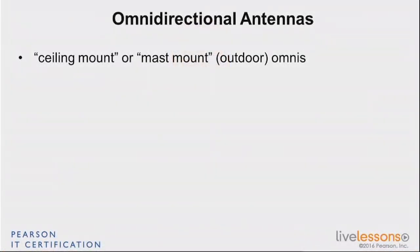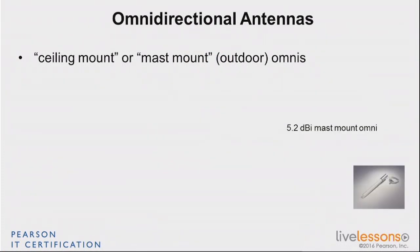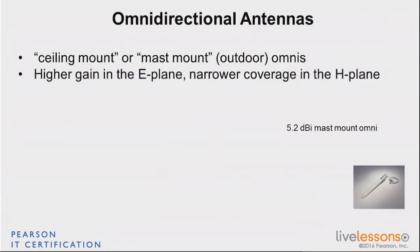There are also external antennas that you would connect to an access point — for example, the ceiling mount or the mast mount omnidirectional antennas. This one, for example, is a 5.2 dBi mast mount omnidirectional antenna. It's omni, which means it's going to have 360-degree coverage in the H-plane.